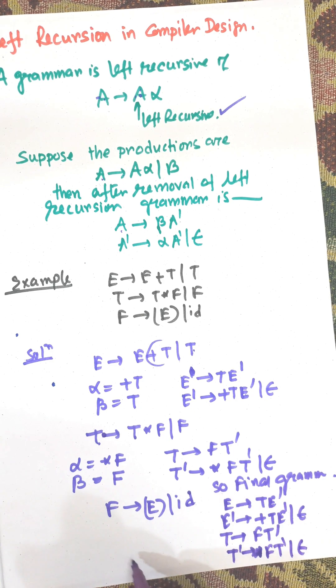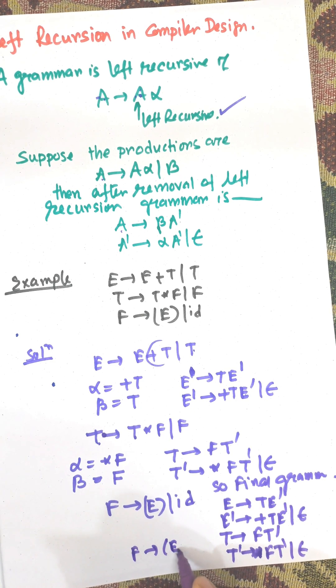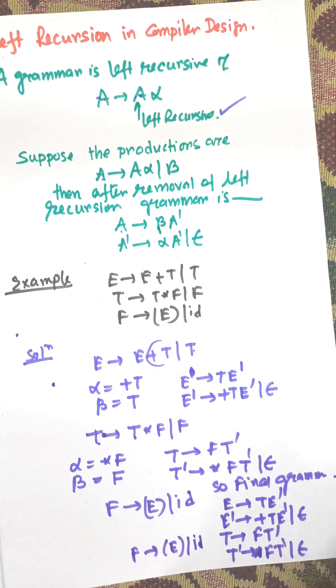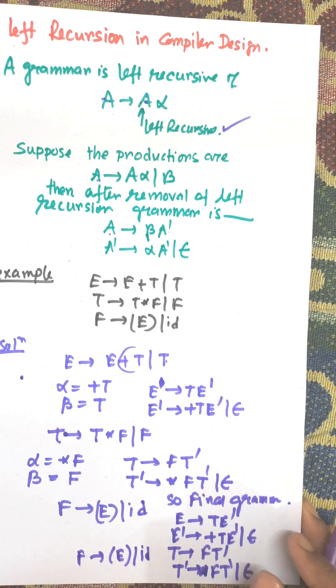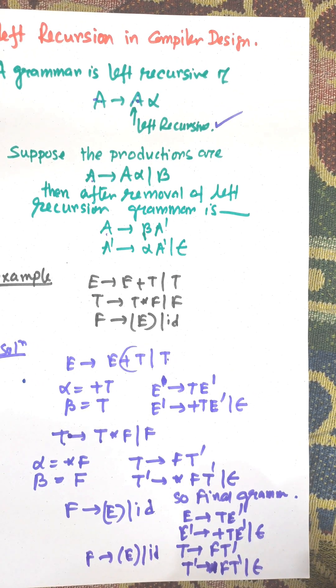And T' → *FT' | ε, and F → (E) | id. So this is the concept of left recursion in compilation. Thank you very much for watching this.